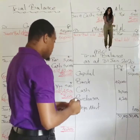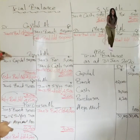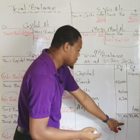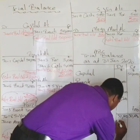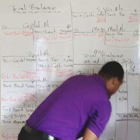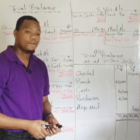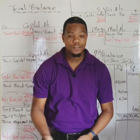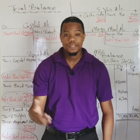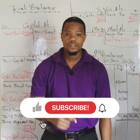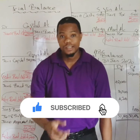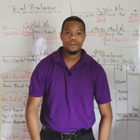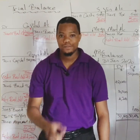Both columns are now equal, which means the double entry accounts were done correctly. We put a double line beneath the totals to signify that the trial balance is closed off. That is how you do a trial balance. If you have any questions, feel free to comment below. Thank you for choosing Everything Business — please like, subscribe, share, and hit the notification bell so you never miss a tutorial.